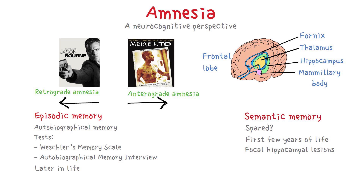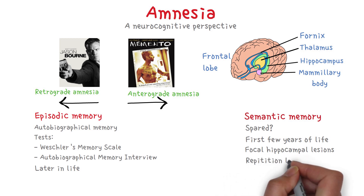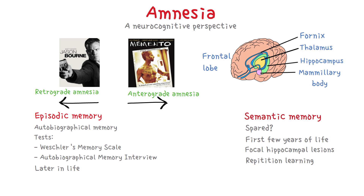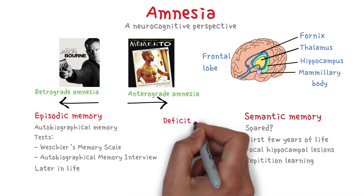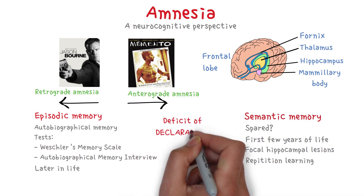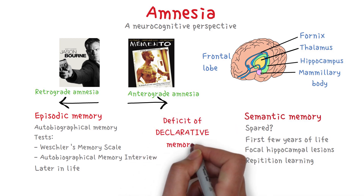In some cases, new semantic memories can be formed by repetition learning. Finally, other memory types such as short-term memory, procedural memory, and perceptual priming are generally spared in amnesia. According to researchers, amnesia is mainly a deficit of declarative memory.